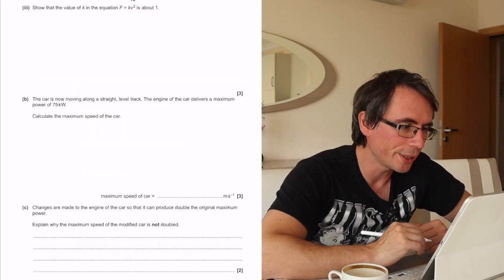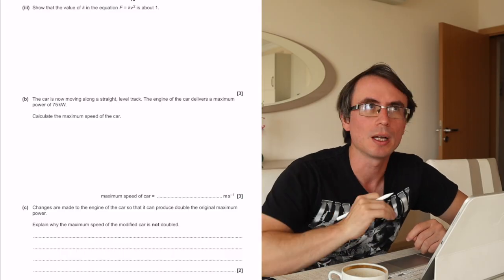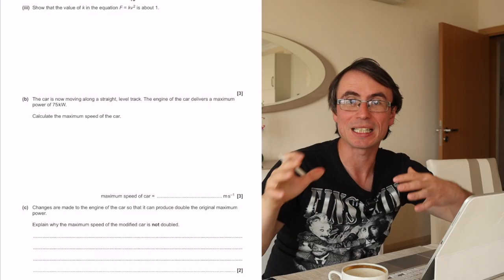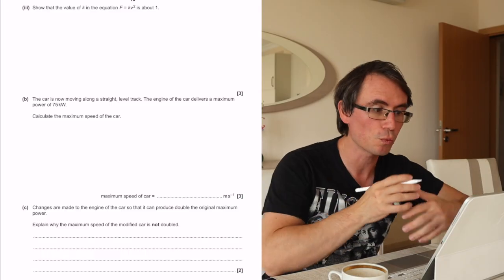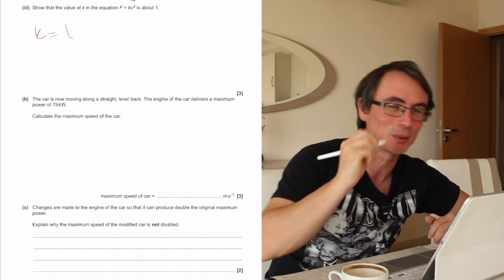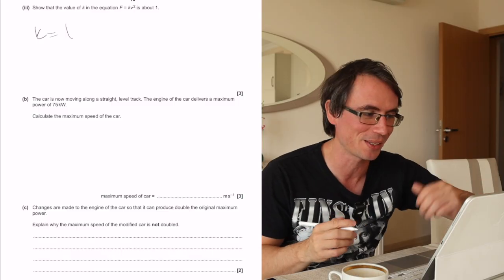Notice the command word: show that the value of k in the equation is about 1. In a show question, your marks will go entirely for your working out rather than just the final value. If we were to just write k equals 1, don't do that. This is not giving us any new information. All this is given in the question.